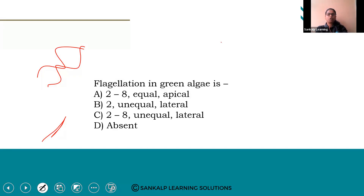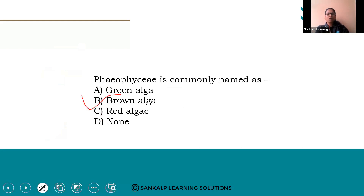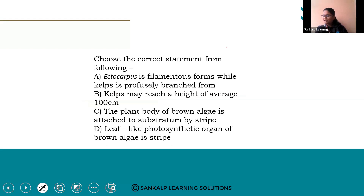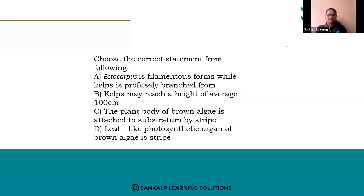Next question: Phaeophyceae is commonly named as — green algae, brown algae, red algae, or none of these. Option B — brown algae — is the right answer.